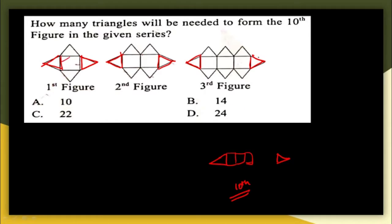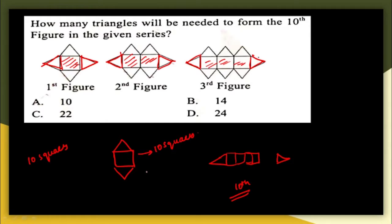Now we need to find how many triangles are in between. In the 1st figure there is one square, in the 2nd figure two squares, in the 3rd three squares — so in the 10th figure there will be 10 squares. Each square has two triangles on its top and bottom.